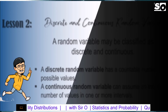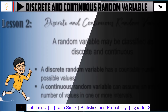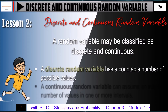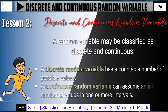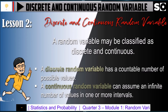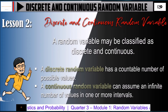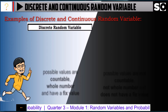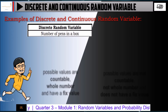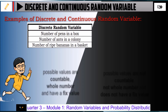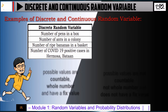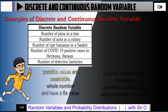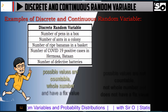A random variable may be classified as discrete or continuous. A discrete random variable has a countable number of possible values, while a continuous random variable can assume an infinite number of values in one or more intervals. Examples of discrete random variables include: number of pens in a box, number of ants in a colony, number of ripe bananas in a basket, number of COVID-19 positive cases in Hermosa Bataan, and number of defective batteries. The possible values for a discrete random variable are countable, whole numbers, and have a fixed value.